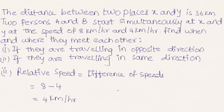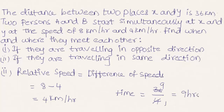The time taken by A and B to meet is total distance, 36 kilometers, divided by the relative speed of 4 kilometers per hour. Simplifying, 36 divided by 4 gives 9 hours.